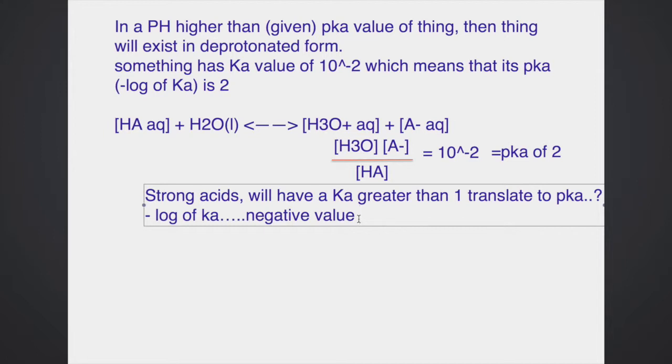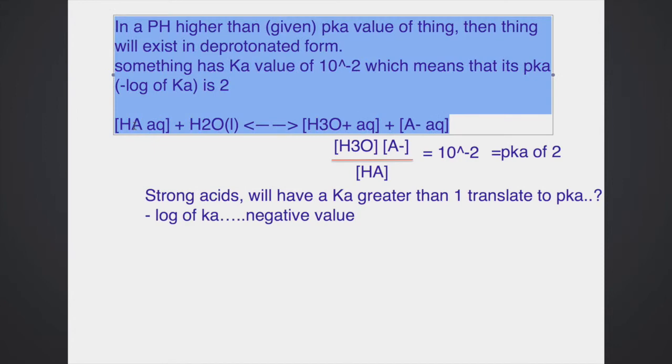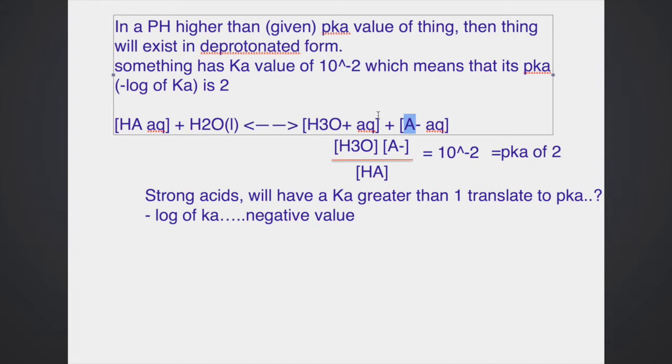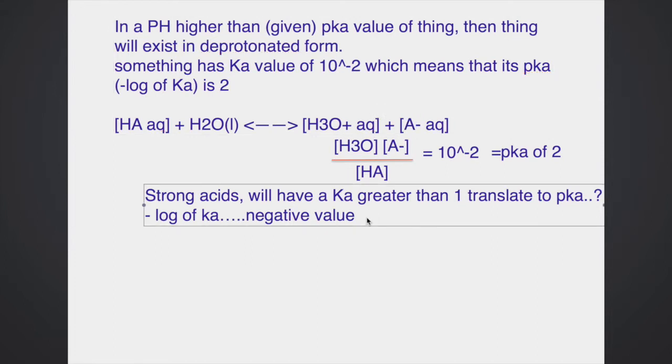Alright, that was a side tangent. Now, going back, if we introduce this acid, this HA acid, into an environment that has a, let's say, high pH, then it wouldn't exist in its deprotonated form. Why would it go to its products? And that is actually pretty simple.